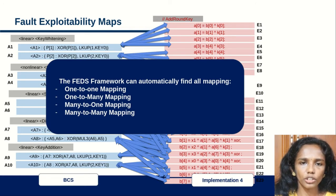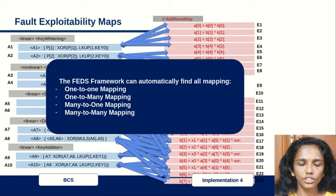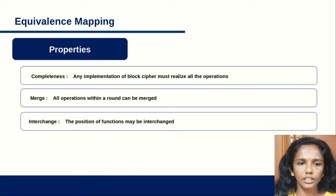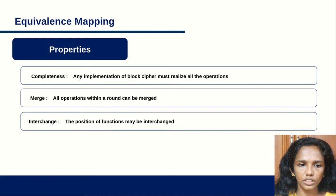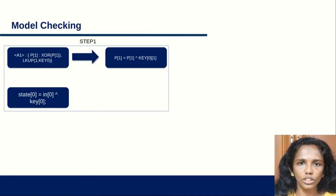We need an automated framework that can automatically find the mapping between high-level representation and implementation, considering all these mapping cases. We introduce the FEDS framework to find this mapping and identify exploitable locations. FEDS considers three basic properties: completeness (any implementation must realize all operations), operations within a round can be merged, and positions of functions can be interchanged. We also use a model checking tool to find equivalence between two levels of representation.